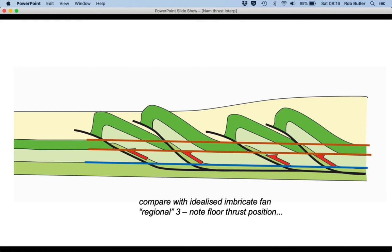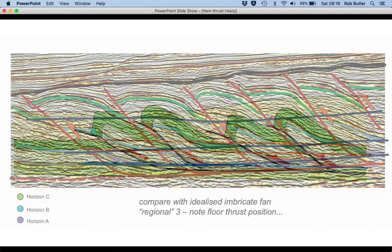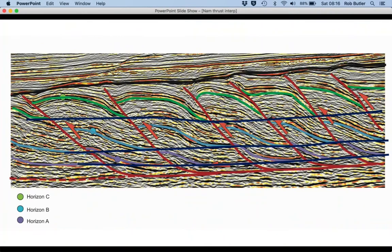Okay, let's take this understanding and go back to the seismic. So there are the regionals for the green, the blue, and the mauve horizons, and you can see that the trailing edge of each imbricate thrust slice—in other words the footwall ramp—lines up to define the regionals. It's a really useful check to see that the interpretation is making geometric sense.